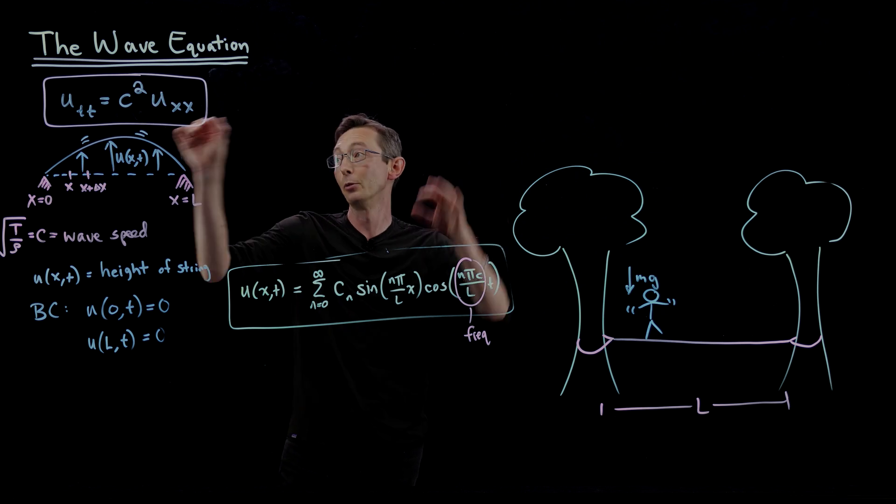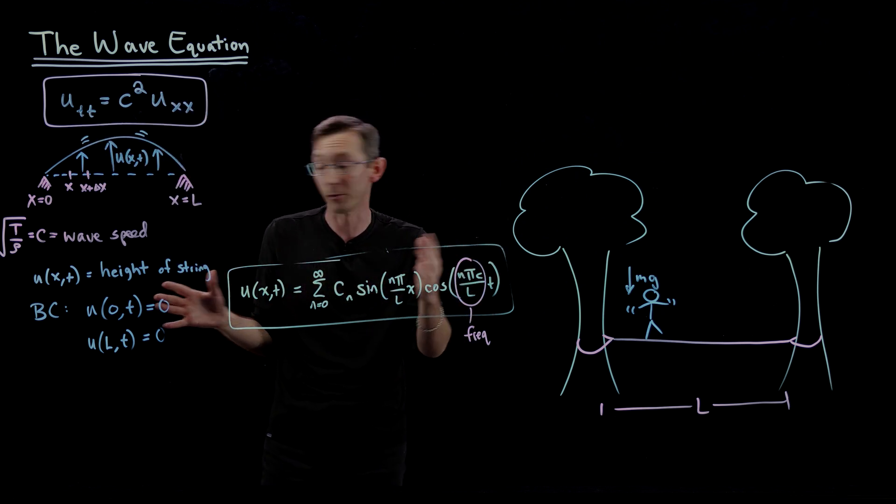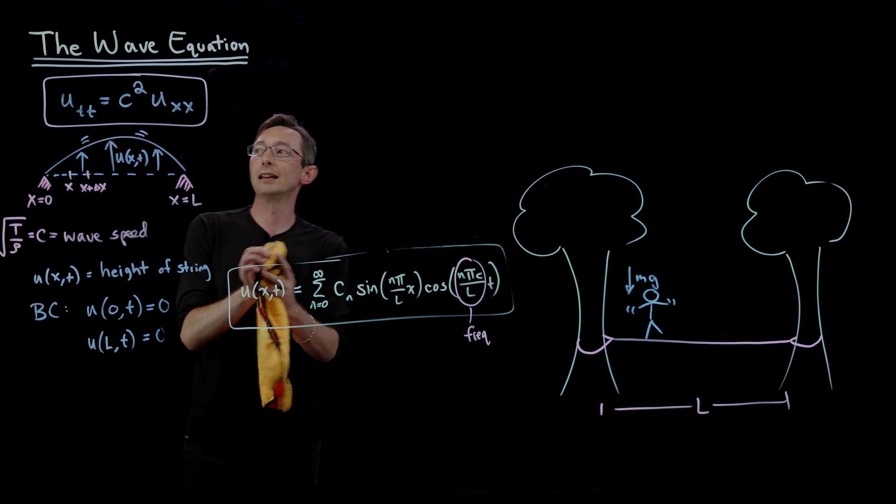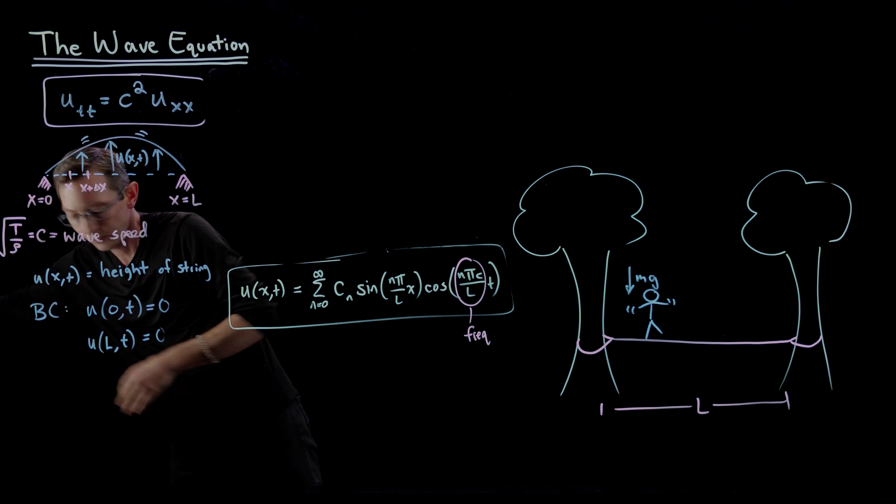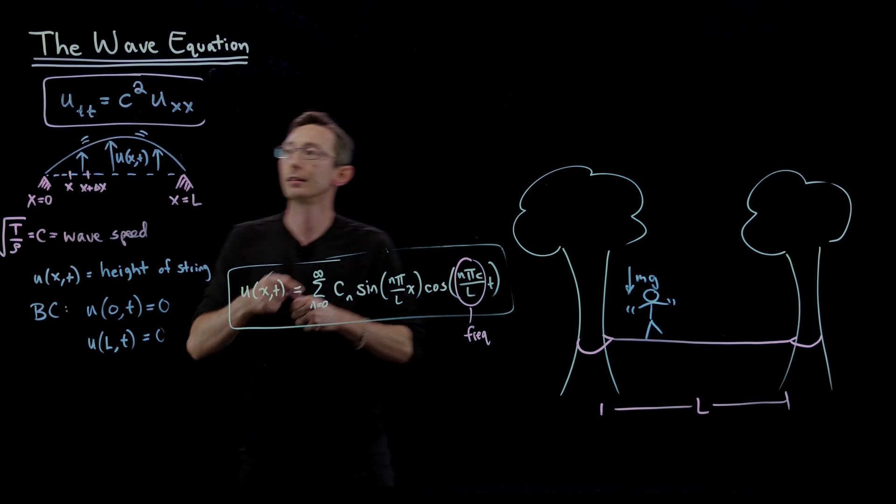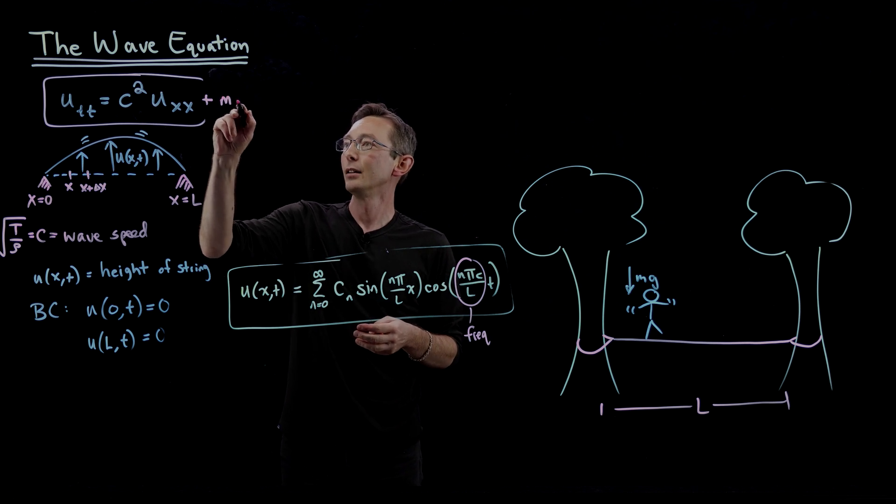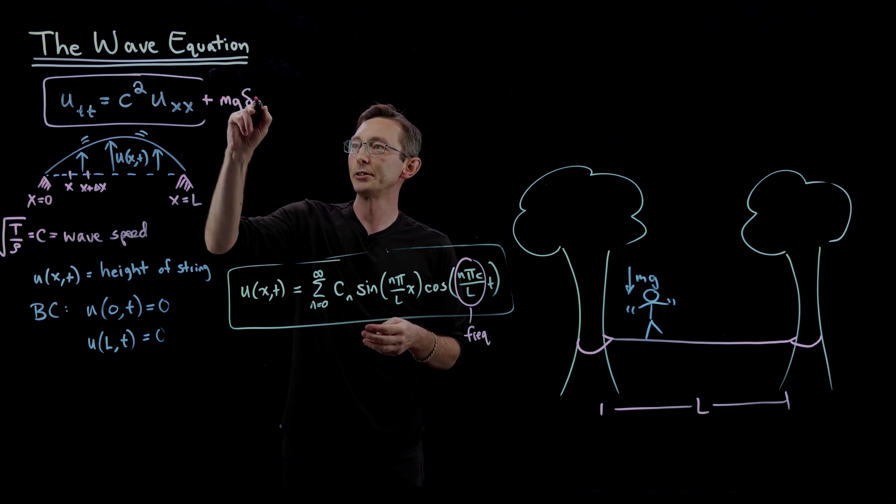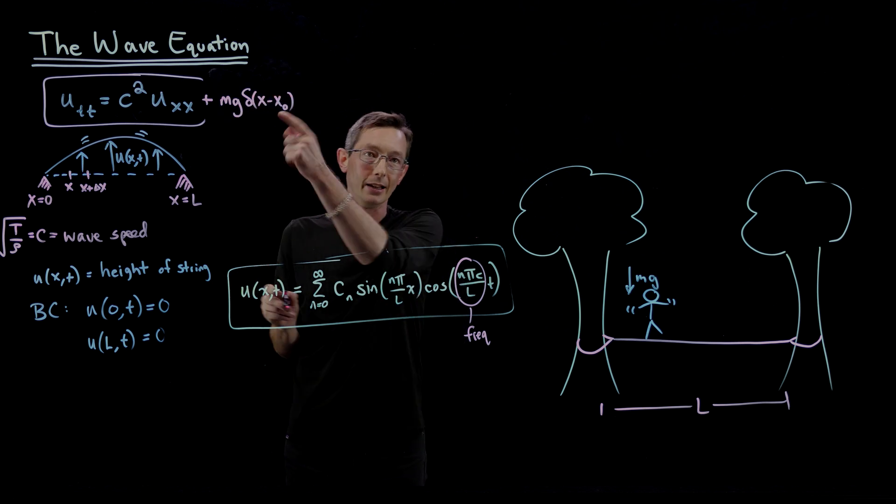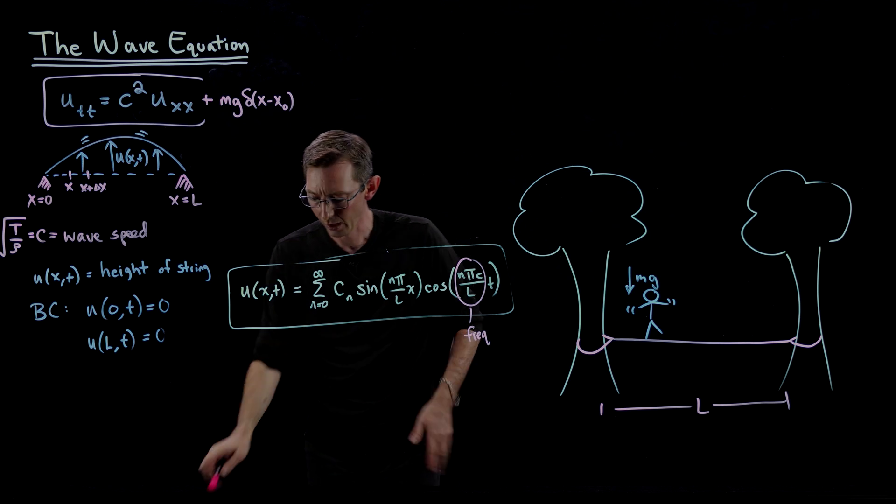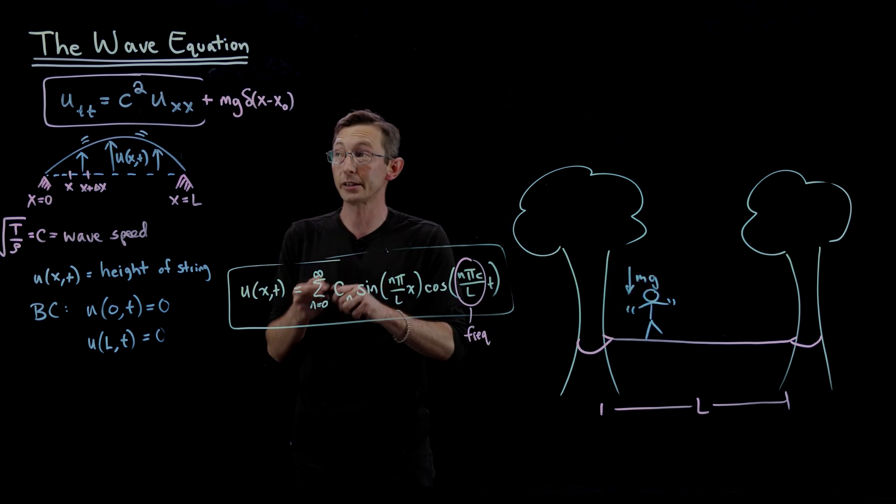And I'm guessing—again, this is kind of a homework problem for you—I'm guessing we're going to add in a forcing term, something like minus mg. And this is going to be a delta function of x minus wherever the person is standing, x minus x₀. So this is now I've added some spatial delta function forcing because this person is standing on that string.